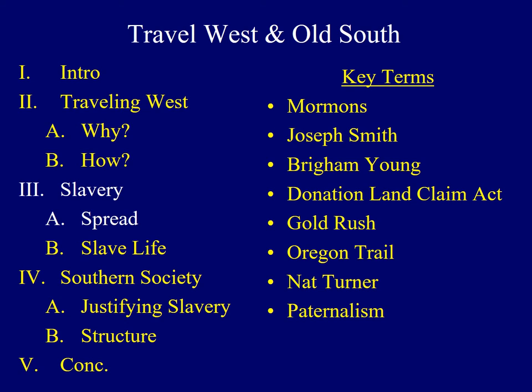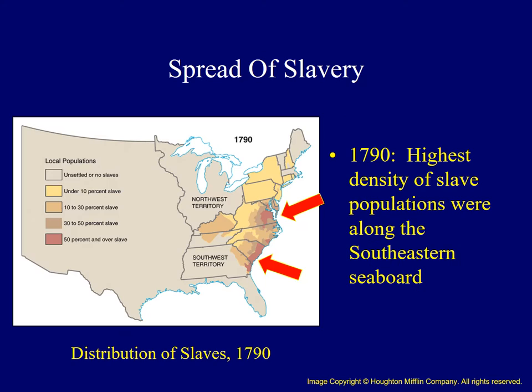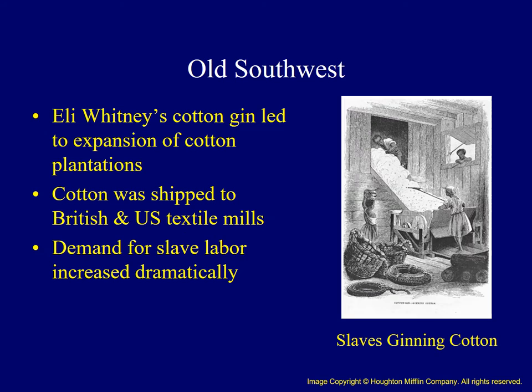The presentation will now switch subjects and address several aspects of life in the Old South, beginning with some characteristics of slavery. One of the important concepts to consider is the expansion of the institution over time. It was the perfection of the cotton gin by Eli Whitney in the 1790s that led to a major expansion of cotton plantations and slave labor in the United States, as cotton was shipped to textile mills in the North and particularly Great Britain.